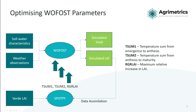For any given run, SpotPy will take the simulated leaf area index and the observed leaf area index, compare them, and then update these parameters. This is then run multiple times over and over again until the simulated leaf area index and the Verde leaf area index are similar to a predefined limit.